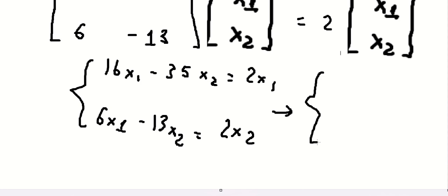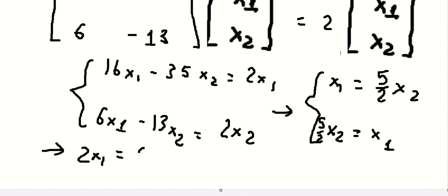So we calculate, we have 5 over 2 x2 in here. So we have 2 x1 equals to 5 x2. So this one at least number 5, this one at least number 2.